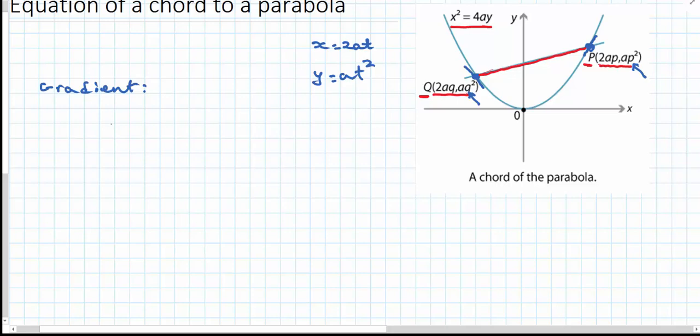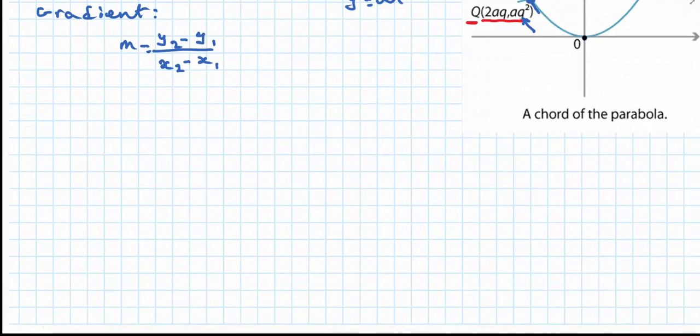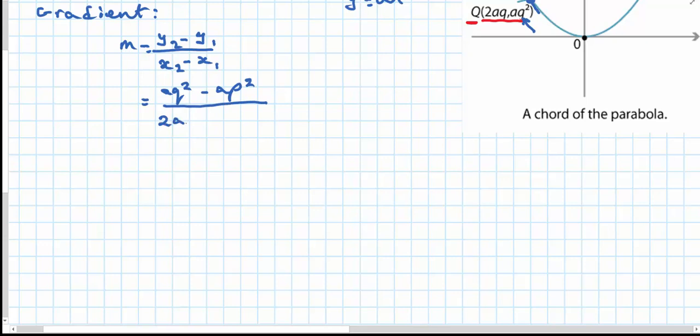We know gradient is found using y2 minus y1 over x2 minus x1. So let's substitute in: aq squared minus ap squared for y1 all over 2aq minus 2ap.